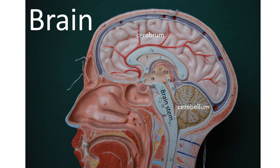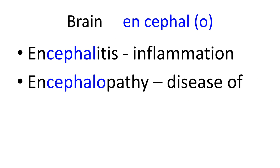Now let's look at terminology related to the brain itself. This large part on top is the cerebrum. The cerebellum is the brown part, and the brain stem — shown in white — consists of three parts: the midbrain, the pons, and the medulla oblongata. 'Kephel' is the Greek word for head, and we use it to relate to the head or, more commonly, to the brain.